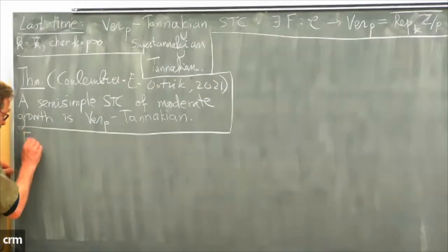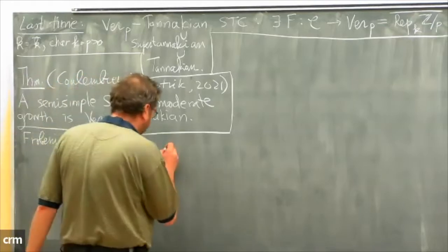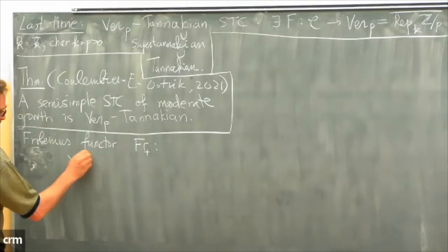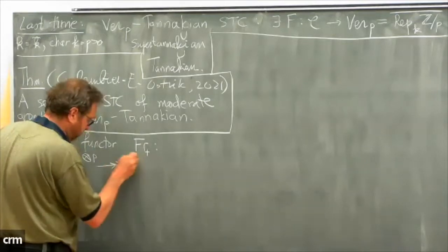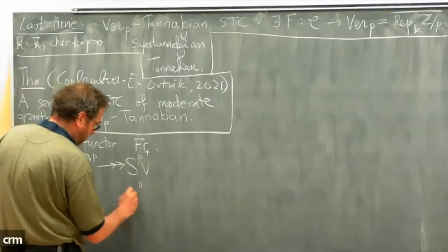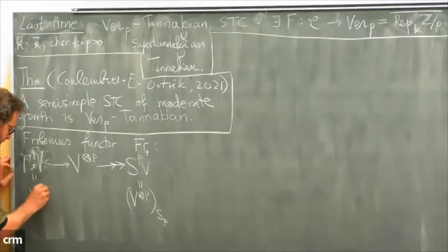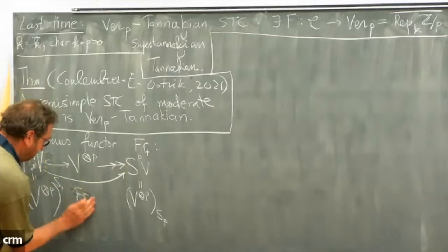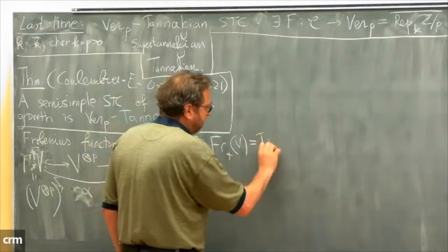So I want to have an if-and-only-if statement to characterize categorically the categories which are ver-p Tannakian. For this purpose I define the Frobenius functor F-plus. If you have an object V, we can take the p-th tensor power; it maps surjectively to the symmetric power, and also contains the divided symmetric power — the coinvariants with respect to S_p and the invariants with respect to S_p. The composite map is called alpha, and F-plus of V is defined as the image of alpha.